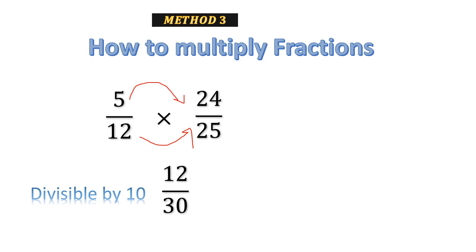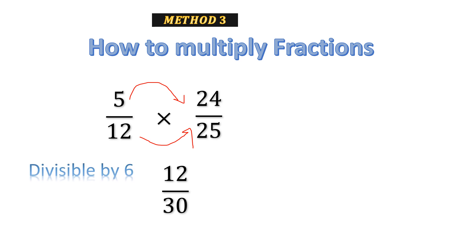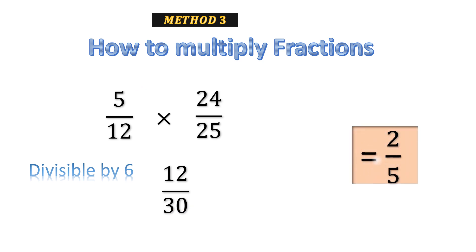Now is there any common factor between 12 and 30? Yes, they are both divisible by 6. 6 times 2 is 12, and 6 times 5 is 30. We have again reached our final answer: 2 over 5. So our answer is 2 over 5.